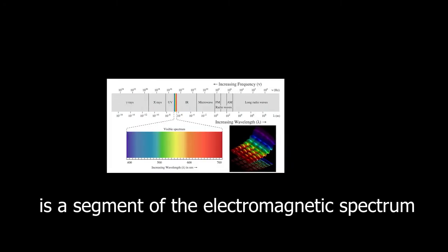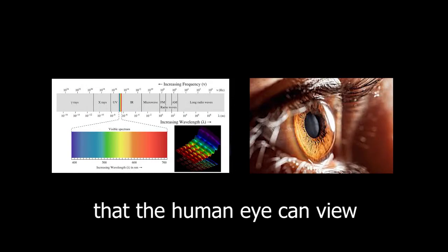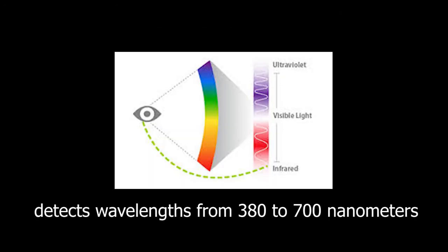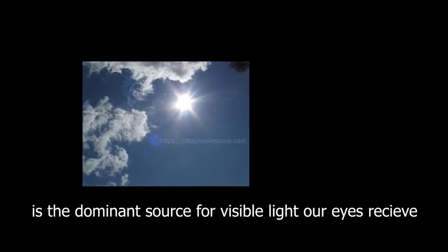Visible light is a segment of the electromagnetic spectrum that the human eye can view. Typically the human eye detects wavelengths from 380 to 700 nanometers. The sun is the dominant source for visible light our eyes receive.